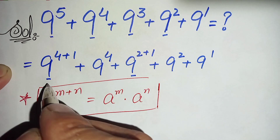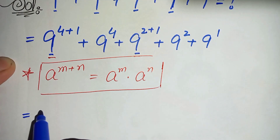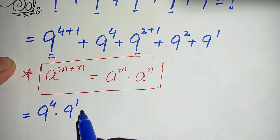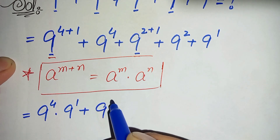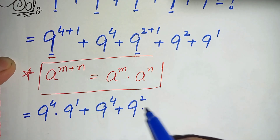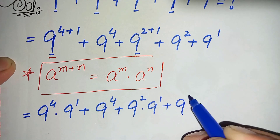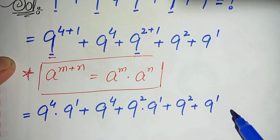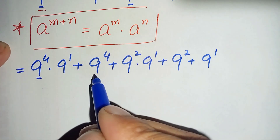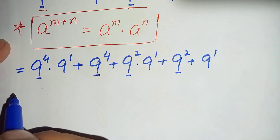Using this exponential property, the first term becomes 9 to the power 4 times 9 to the power 1, plus 9 to the power 4, plus 9 to the power 2 times 9 to the power 1, plus 9 to the power 2, plus 9 to the power 1. Now we will take 9 to the power 4 common from the first two terms, and 9 to the power 2 common from the next two terms.